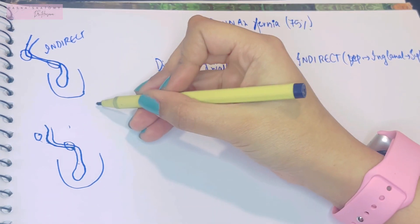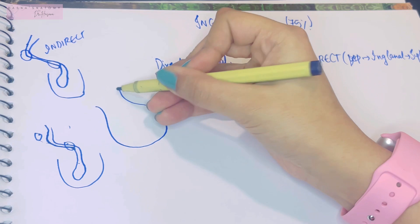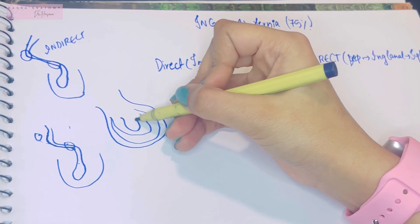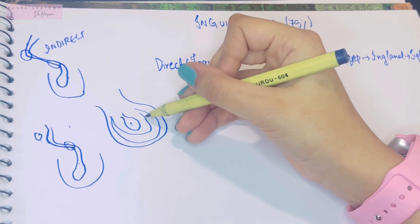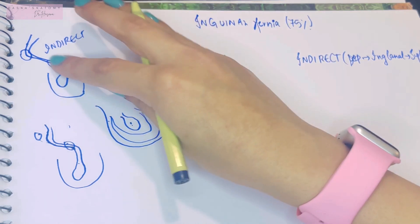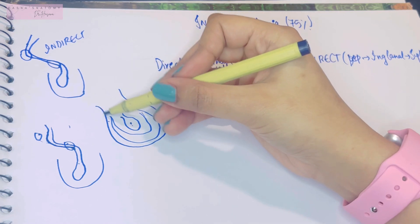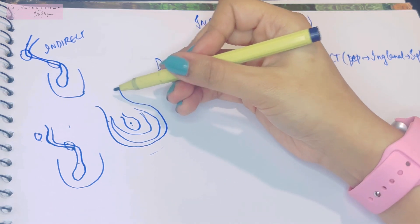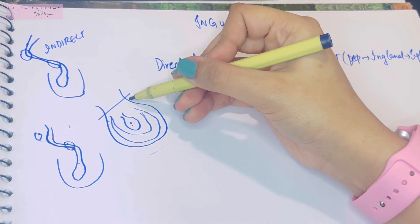A hernia is composed of a sac with coverings and content inside it. The content could be a loop of intestine or peritoneum. The coverings include the spermatic fascias and cremasteric fascia in the case of indirect inguinal hernia. The sac itself has a narrow part called the neck and a larger part called the body of the hernia.